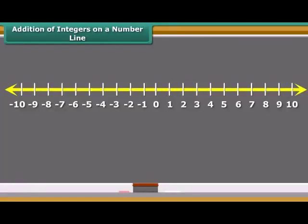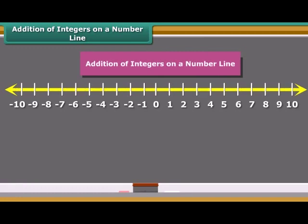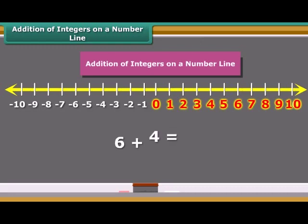Students, now we learn addition of two positive integers on a number line. If we add 6 and 4 on the number line, first move six steps to the right from 0, reaching 6. And then we move four more steps to the right of 6 and reach 10. Thus we get 6 plus 4 is equal to 10.